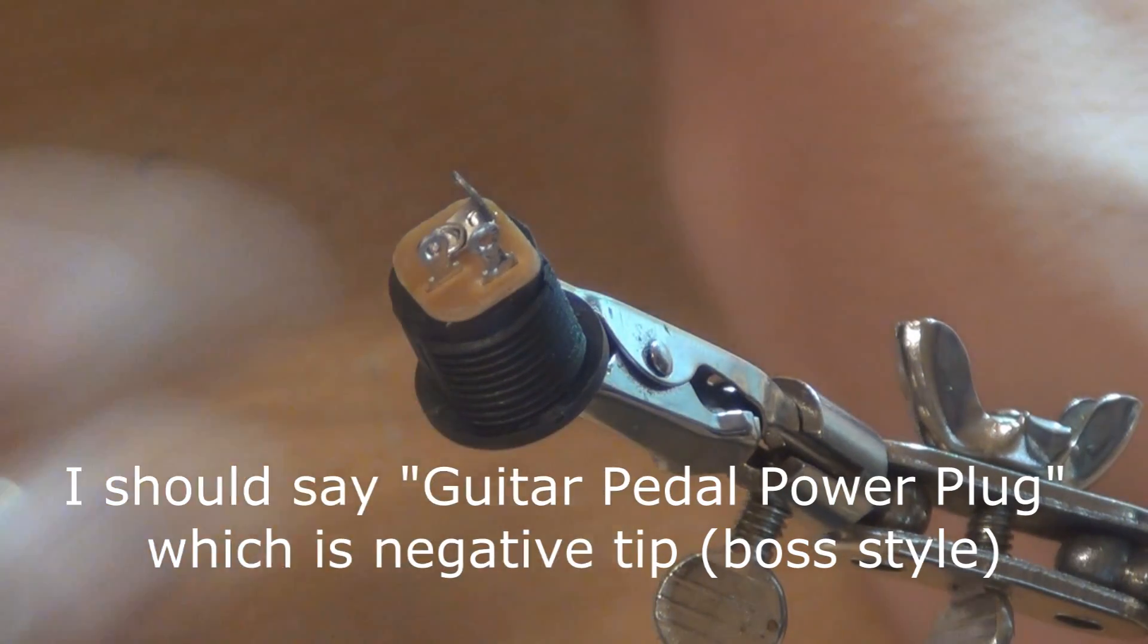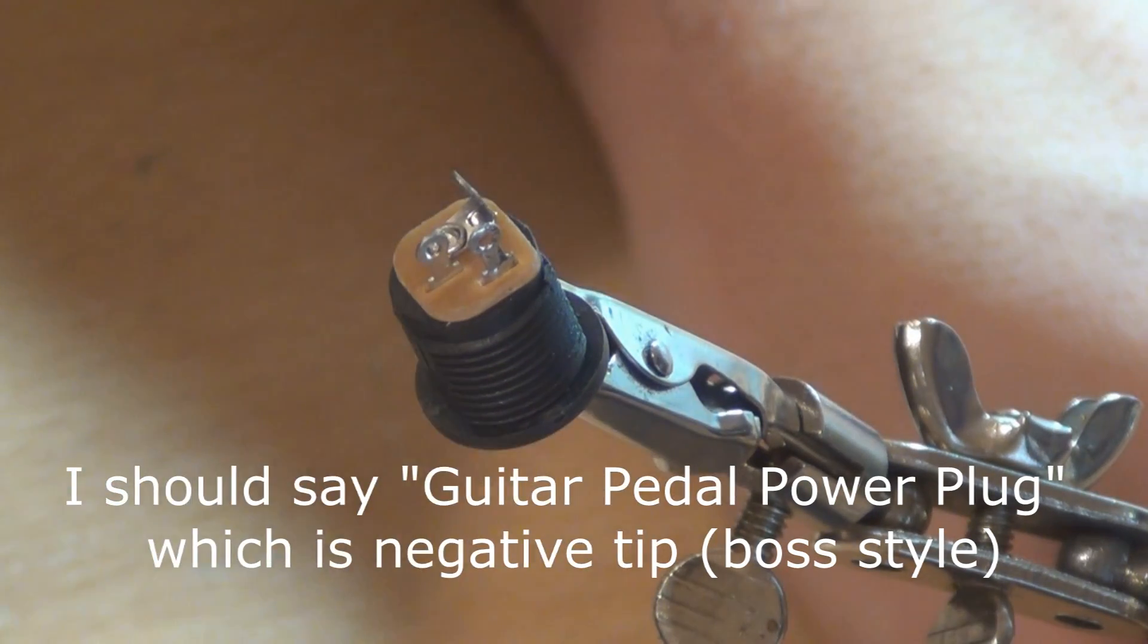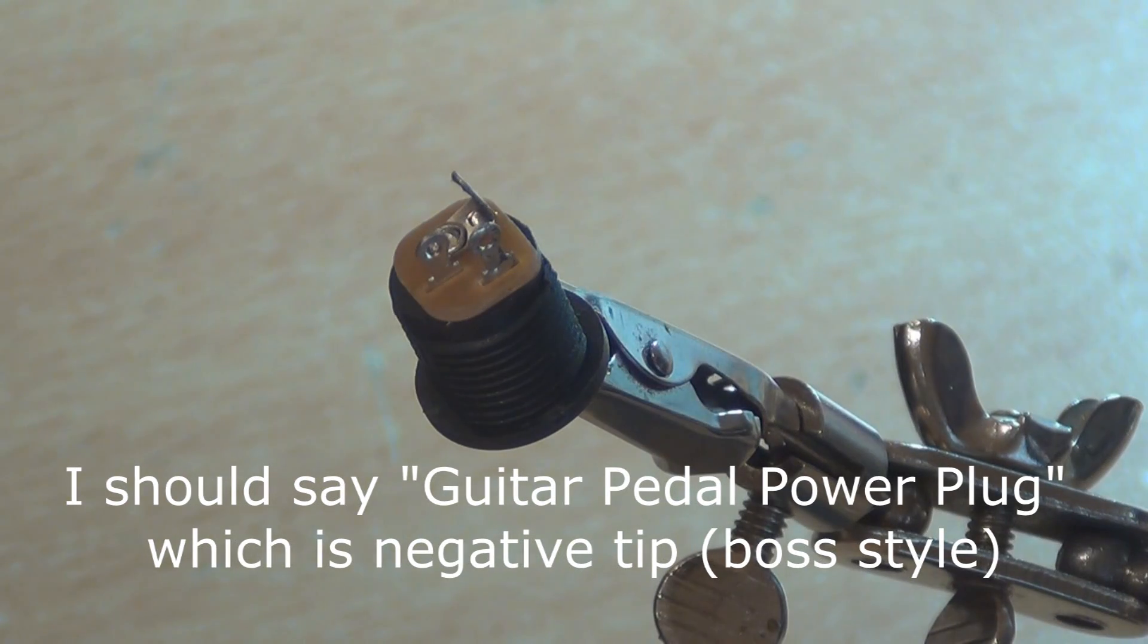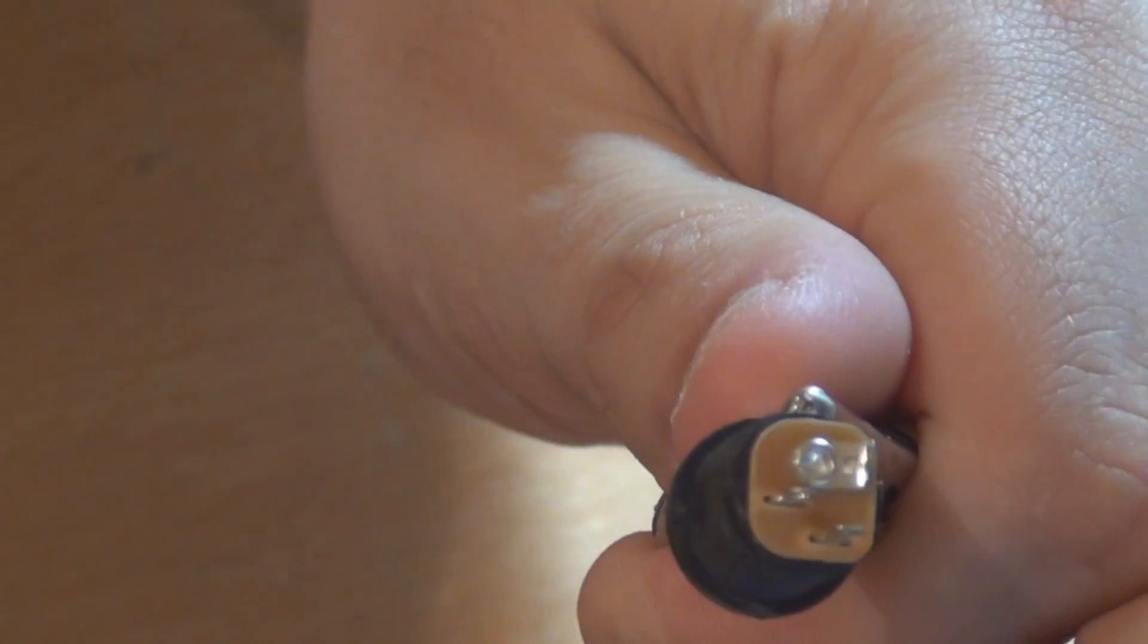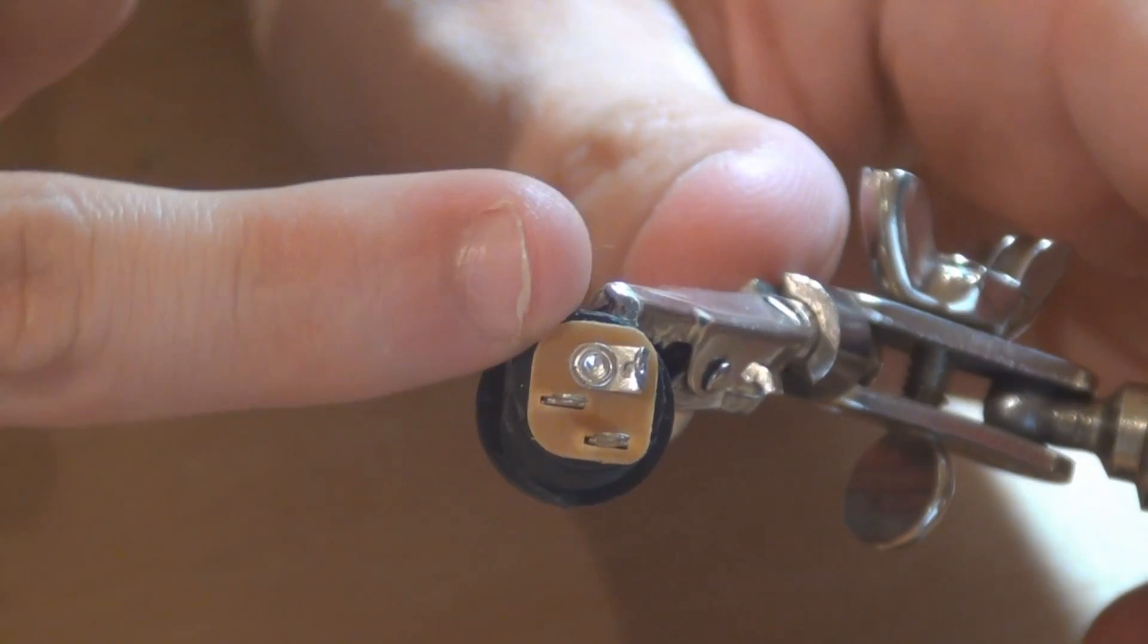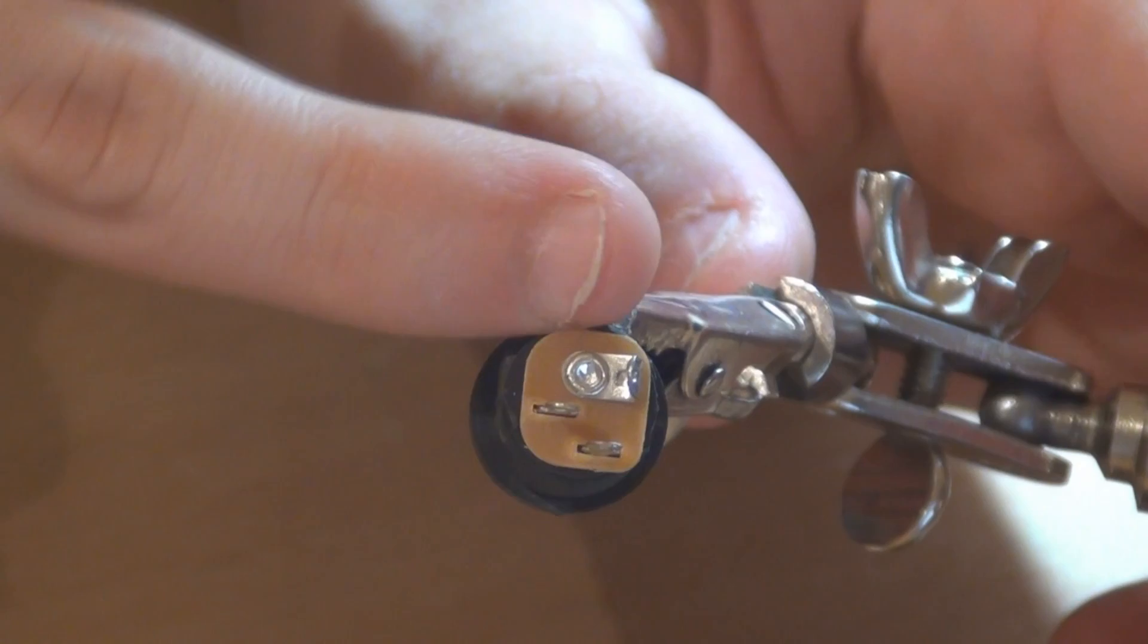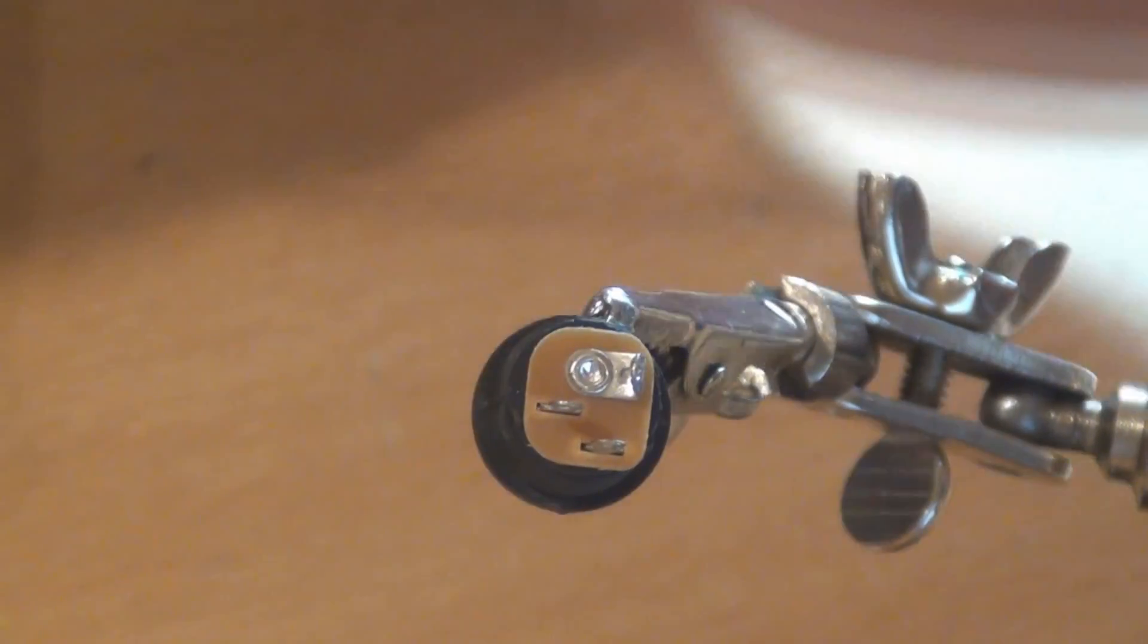If you're using a guitar pedal DC jack, you'll need a 2.1mm DC jack. This is what this thing is here - a DC jack, the back of the DC jack. You can see it's got three different connections on it. This one, the one that looks different, is actually the ground.